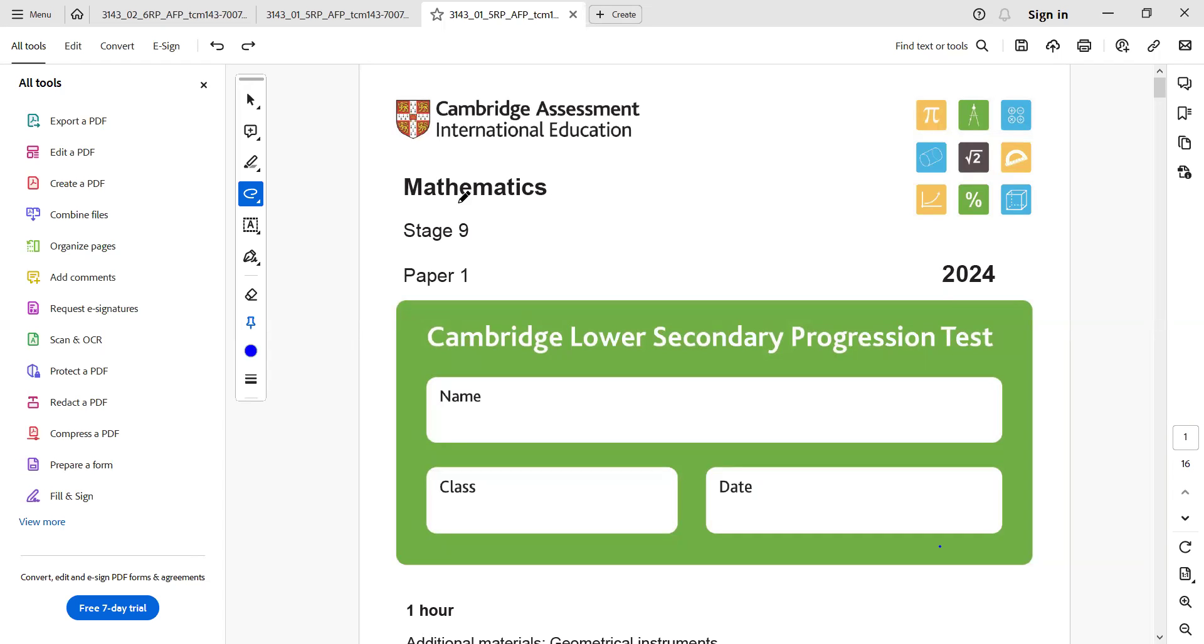In this lecture, we are going to start solving Cambridge mathematics stage 9 paper 1 of 2024 Cambridge lower secondary progression test.